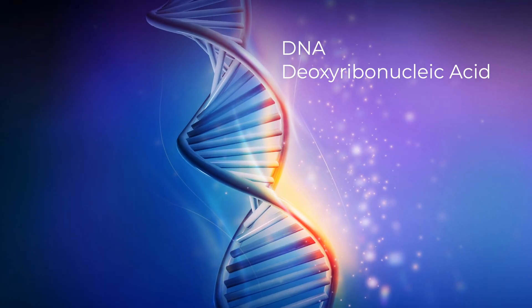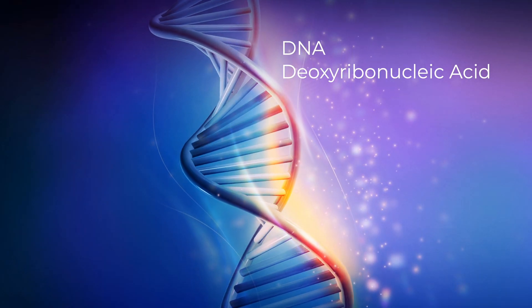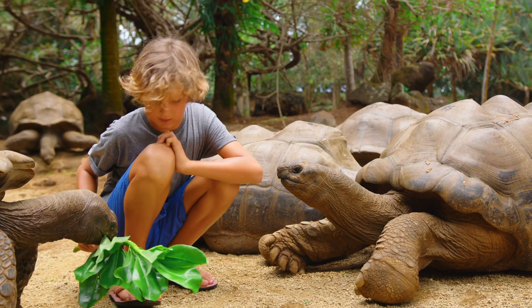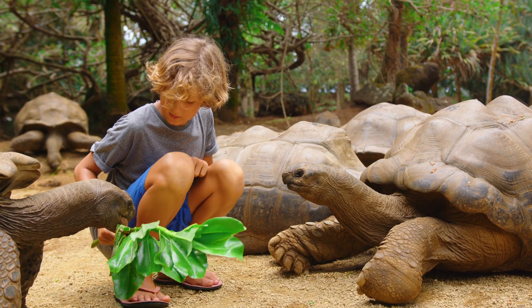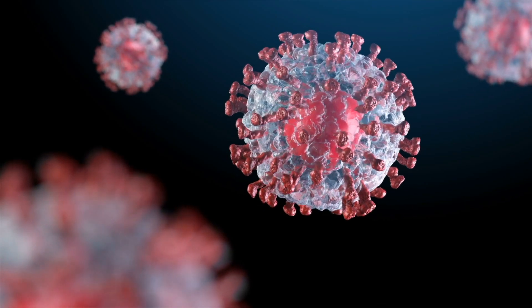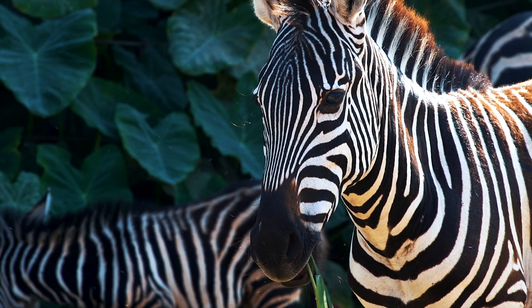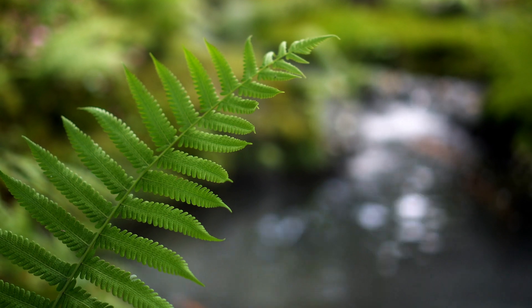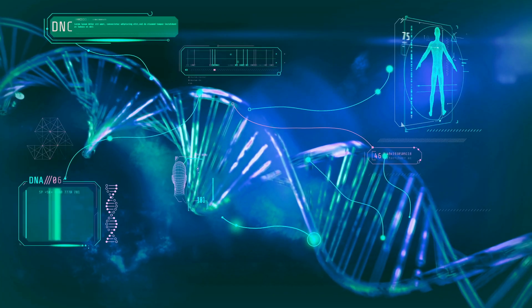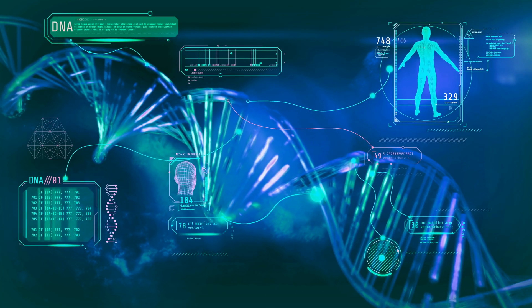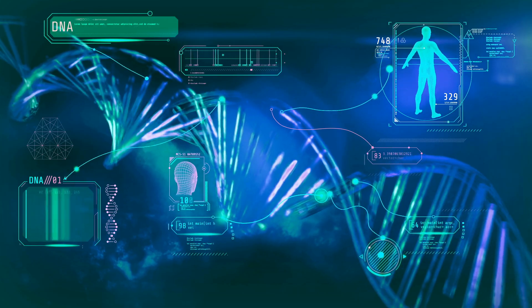And that thread is DNA — deoxyribonucleic acid. DNA is a molecule that carries the genetic instructions for the development, the functioning, the growth, and reproduction of all known living organisms, and even many viruses. I'm talking about your eye color, your skin color, the stripes on a zebra, the shape of the leaves on a tree. DNA is like a master architect that designs and guides the building of life.